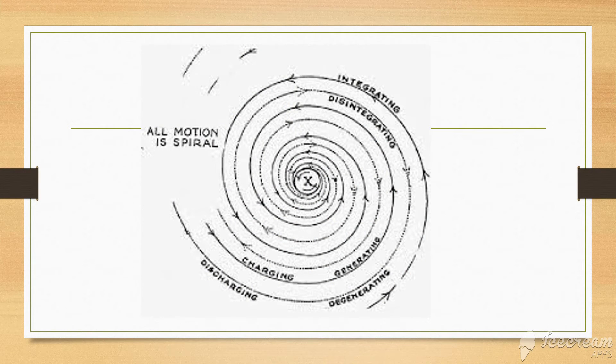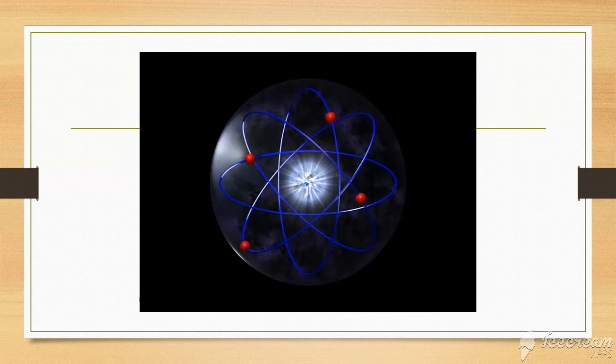So see, all motion is spiral, right? The spiral motion is the representative of the waveform, like what you see in this image. So this direct replica can be just used to demonstrate various aspects of our creation from the minutest to the largest.